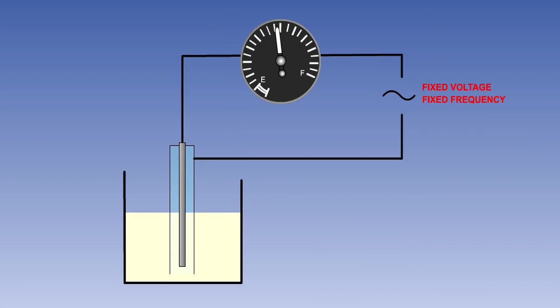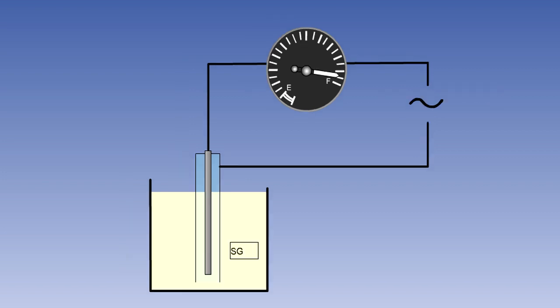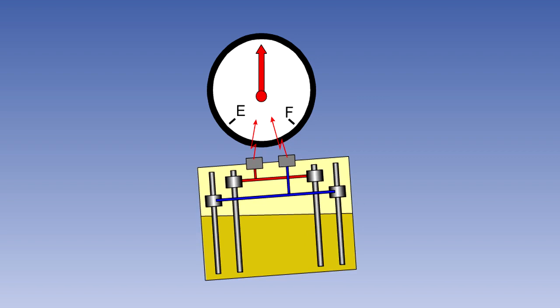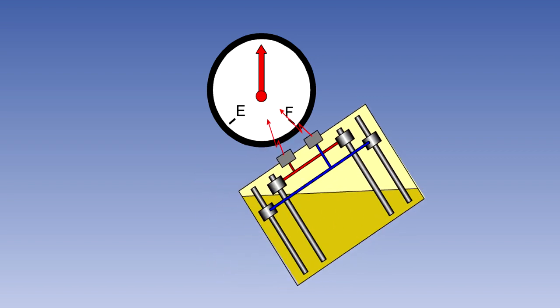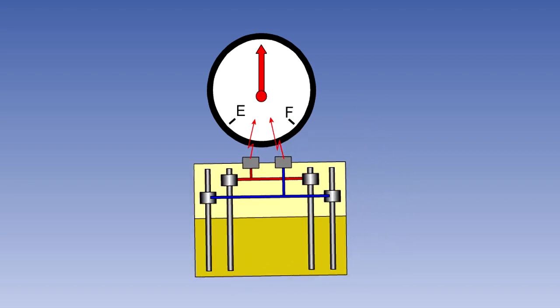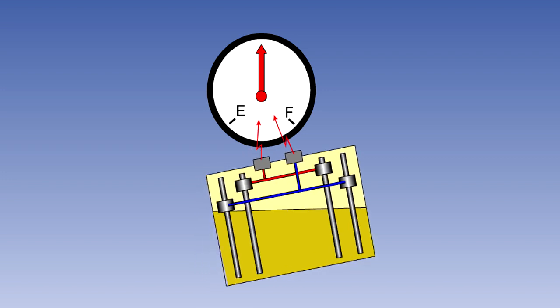Most large aircraft use a capacitance type of system, which uses the difference between dielectric qualities of air and fuel to measure the quantity of fuel in the tank. This type of system is unaffected by specific gravity changes. And by using numerous detectors in the tank, it does not suffer from maneuvering error.